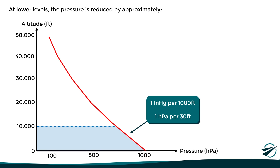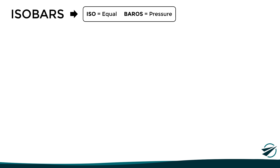The vertical pressure gradient not only varies with altitude, but also with air temperature. To understand this better, let's look at the concept of isobars — a Greek term meaning equal pressure. These are lines joining points of equal pressure, and they are useful for analyzing the behavior of the vertical pressure gradient.